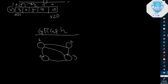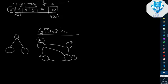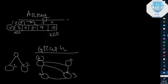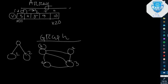A graph is non-linear because it has no fixed predecessor-successor system. Similarly, a tree data structure is also non-linear. In a tree, a node can have one predecessor but multiple successors — for example, one parent node can have multiple children. This is what makes tree and graph non-linear data structures.